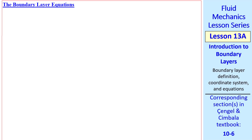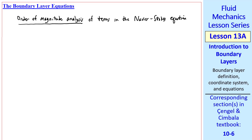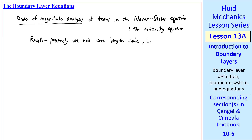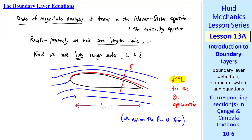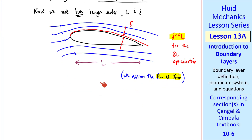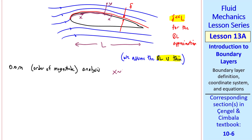Now I'll derive the boundary layer equations by doing an order of magnitude analysis of terms in the Navier-Stokes equation and the continuity equation. Previously we had one length scale, L. Now we need two length scales: L and delta. L is typically the length of the body, but when analyzing the boundary layer we must use delta as the appropriate length scale. In our boundary layer approximation, delta will be much less than L — we assume the boundary layer is thin. For our order of magnitude analysis, x is of order of magnitude L, but y is of order of magnitude delta.